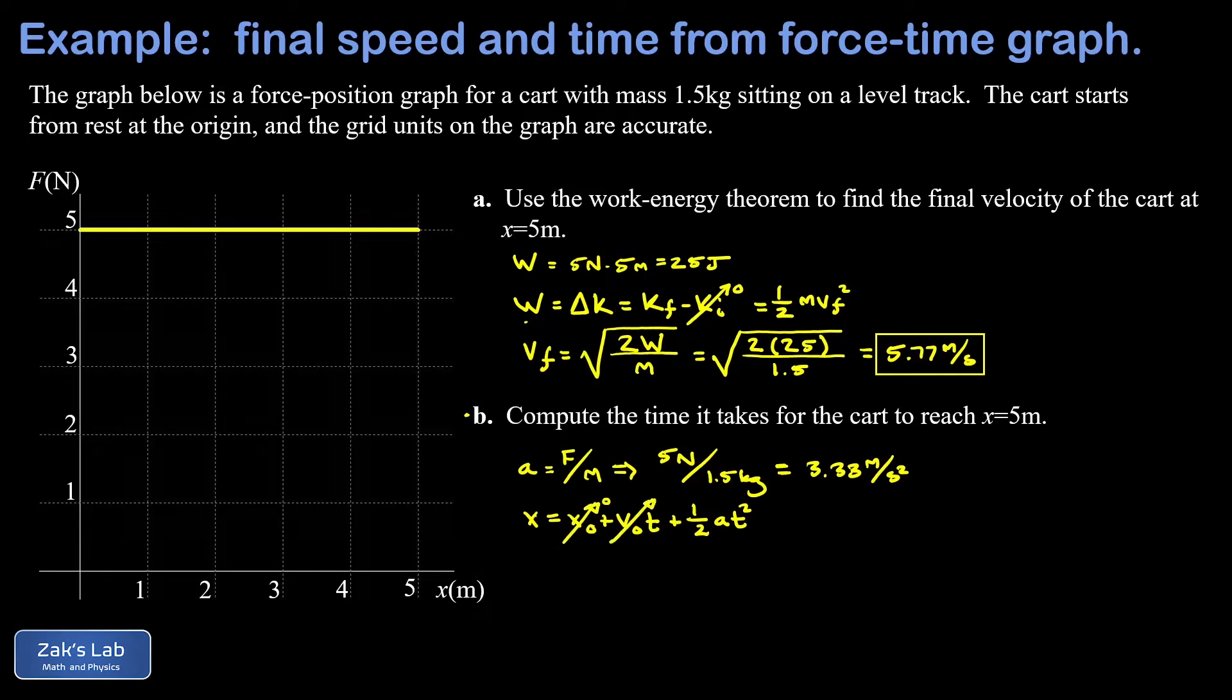And we can solve for t in general. I multiply both sides by 2, divide by a, and square root the result. And we find that t is the square root of 2x over a. And when we run the numbers on this we get about 1.73 seconds, and that's it.